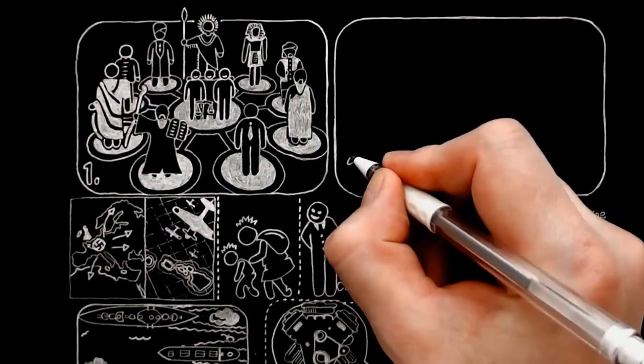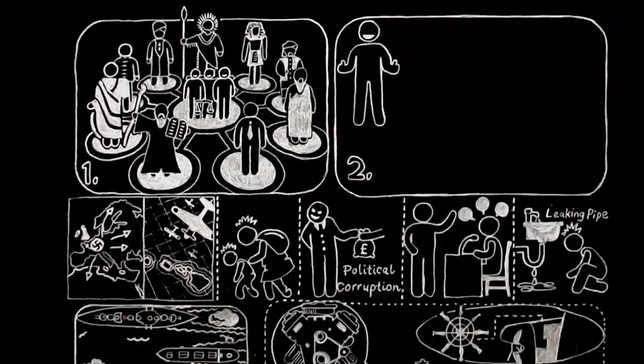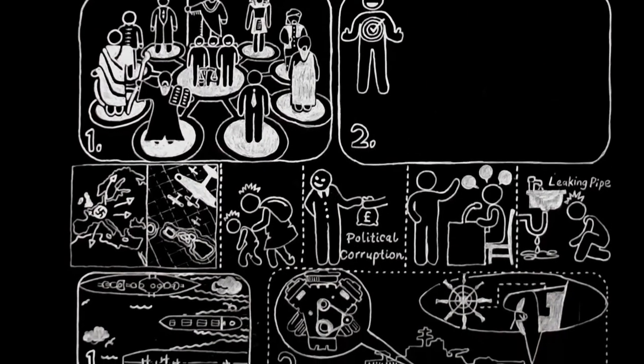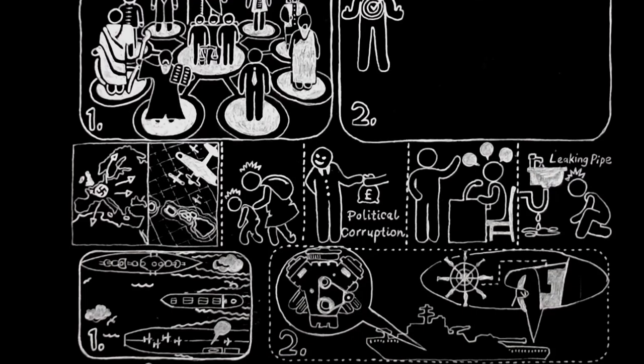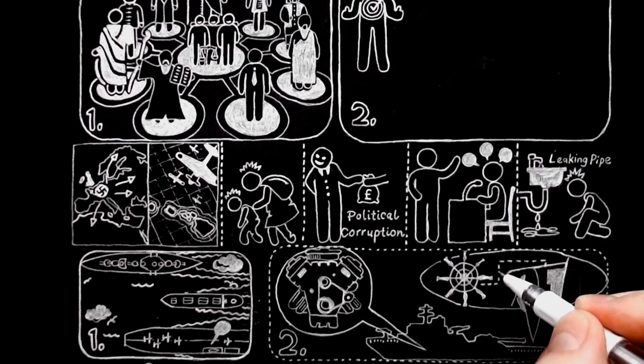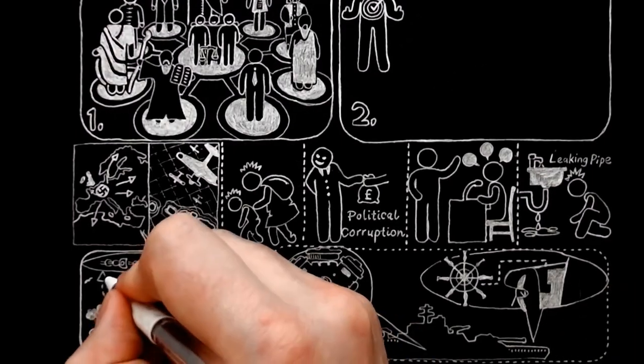Unless we go on to the second thing, the tidying up inside each human being, we are only deceiving ourselves. What is the good of telling the ships how to steer so as to avoid collisions, if, in fact, they are such crazy old tubs that they cannot be steered at all?